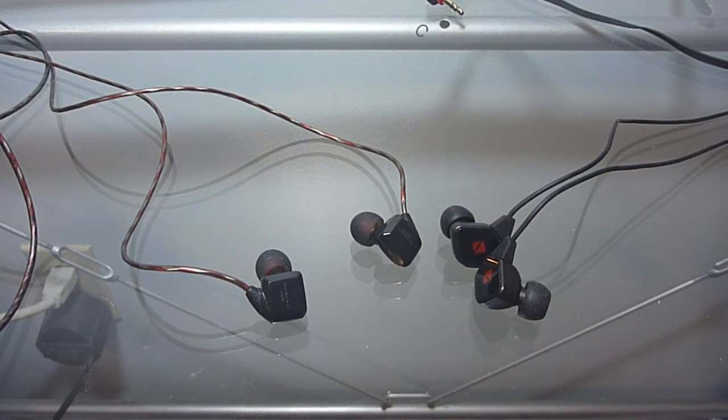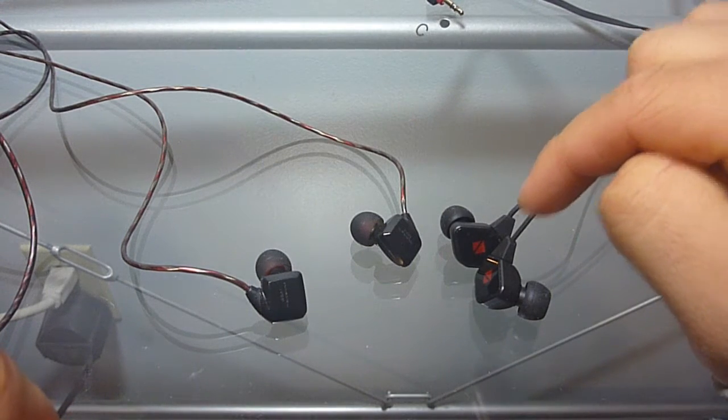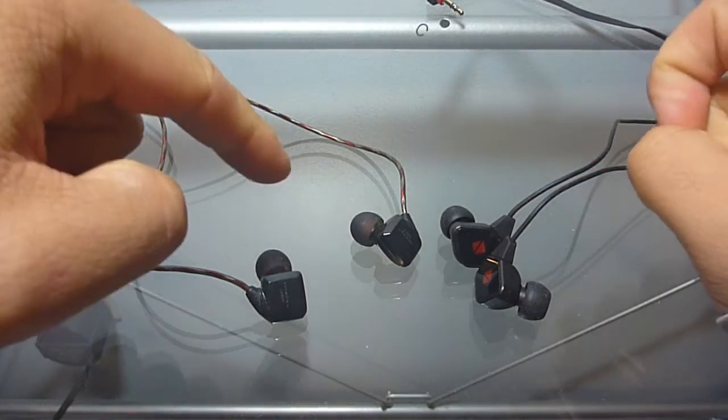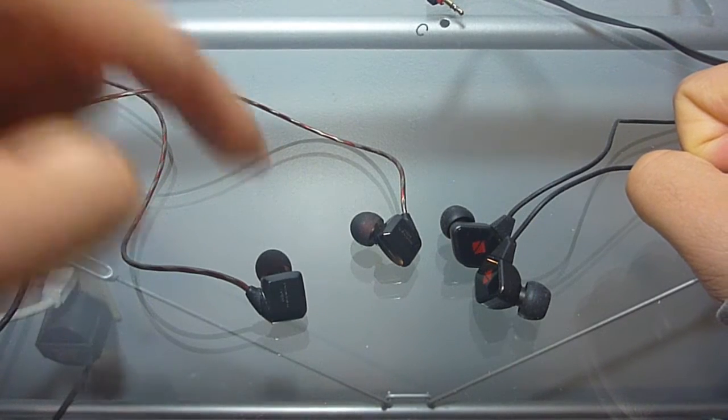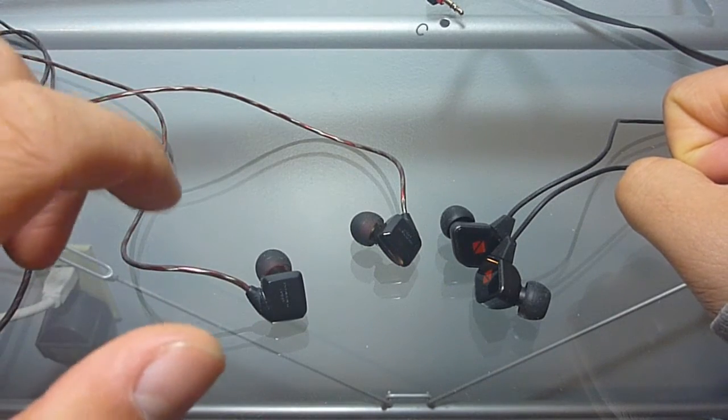Hi, my name is Tom and welcome to On a Student Budget. This is going to be a comparison video between the Havi B3 Pro 1 earphones I have here on my right and the vSonic GR07, and the version I have here is the base edition so it definitely has more bass than the normal GR07.